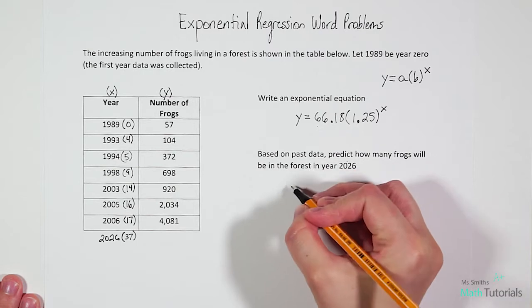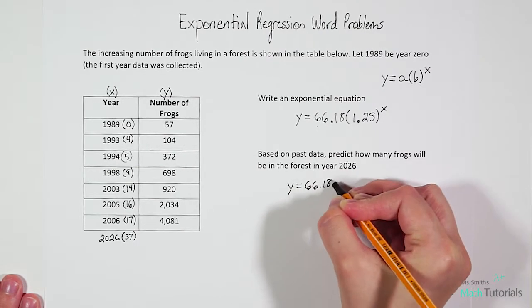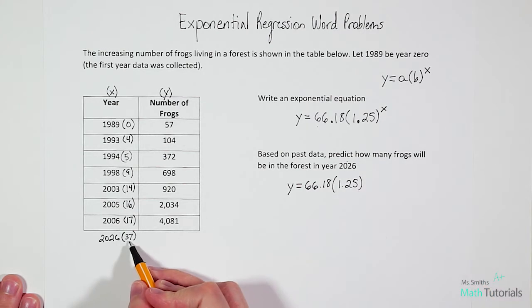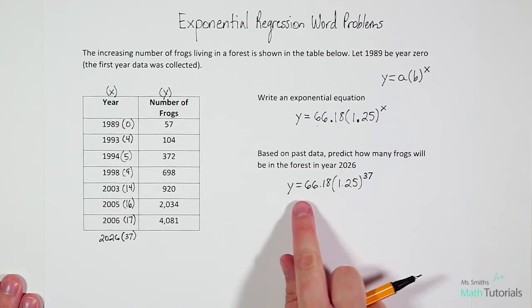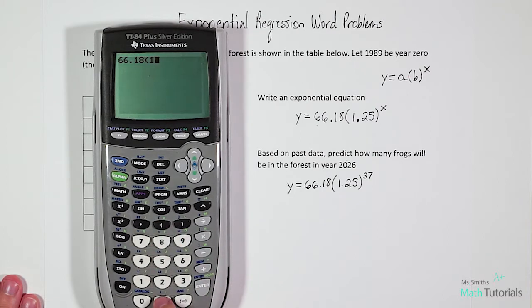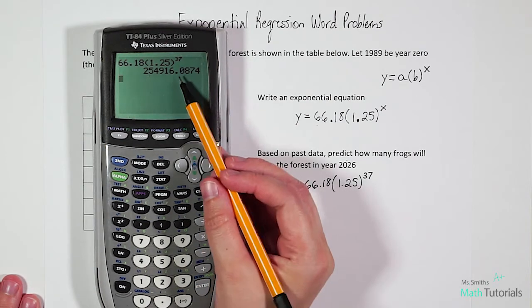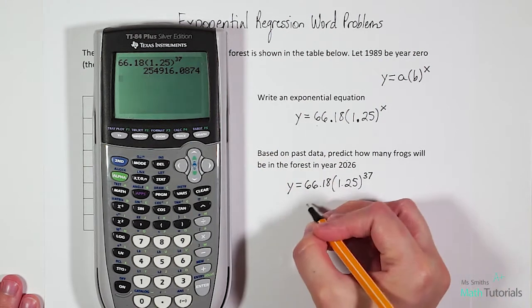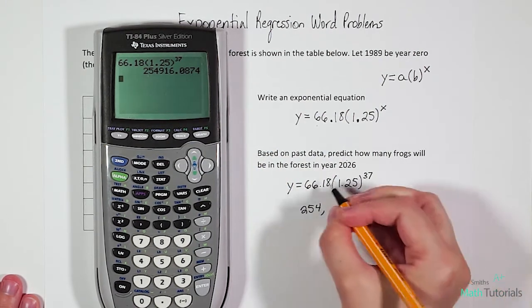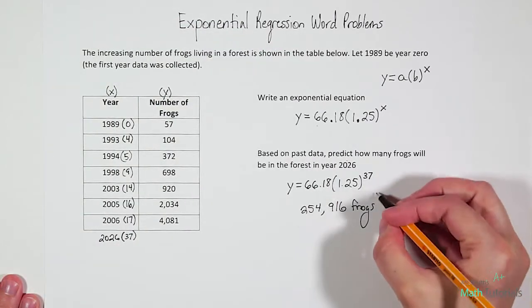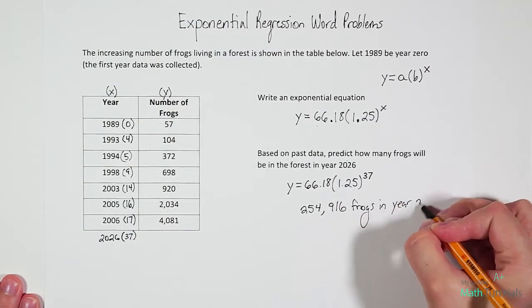So all we have to do is bring our equation down, and instead of x, remember x is our time, so we're just going to put in 37 for x. Now we can just type this in our calculator: 66.18 times 1.25 to the power of 37. And we get a huge number. Notice we get a decimal and we can't have 0.087 of a frog, so we're just going to round to the nearest whole number. So that would be 254,916 frogs in year 2026.